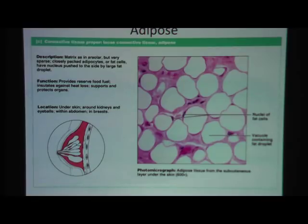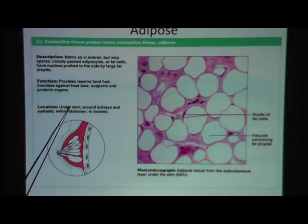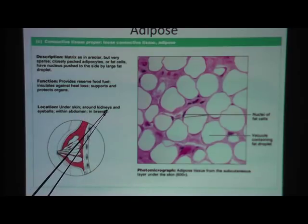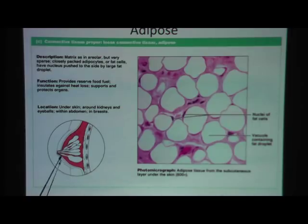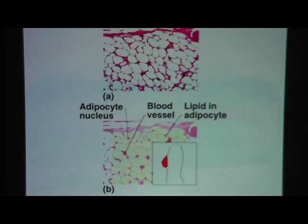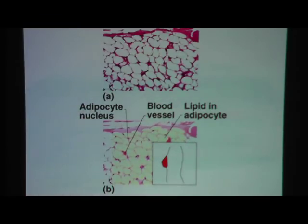A fat cell is called an adipocyte — that's on your list to know, so please write adipocyte, not 'fat cell.' Where is it located? We have fat tissue under the skin, around the kidneys, around the eyeballs, and in the breast tissue as well. So from now on, say adipocyte instead of fat cell.